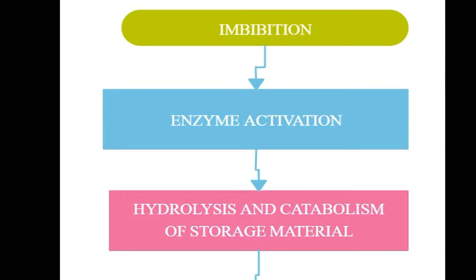Next we have hydrolysis and catabolism of storage material. Utilization of seed components during germination begins with simple sugars, for example glucose, free fatty acids and amino acids, followed by starch, lipids and proteins. Starch is catabolized to glucose primarily by the hydrolytic enzyme amylase. Insoluble storage proteins are catabolized by protease to soluble proteins, which are further hydrolyzed to peptides by peptidases.